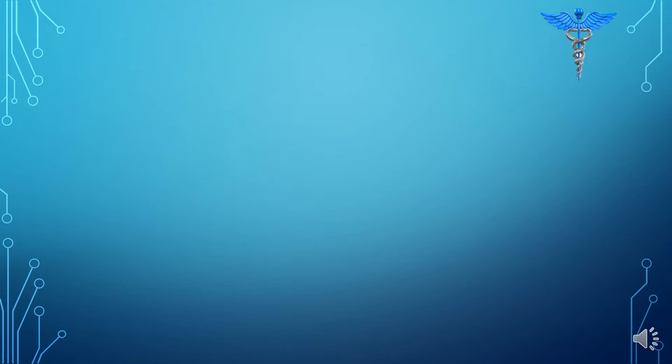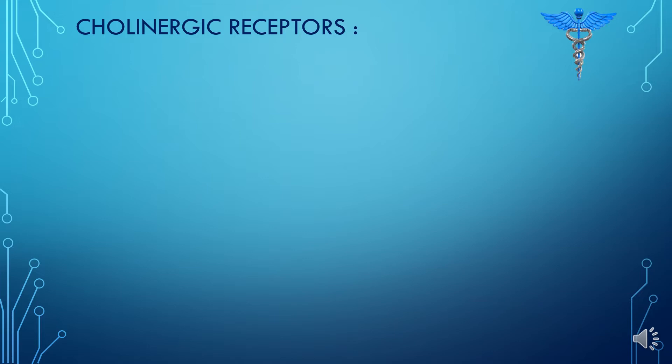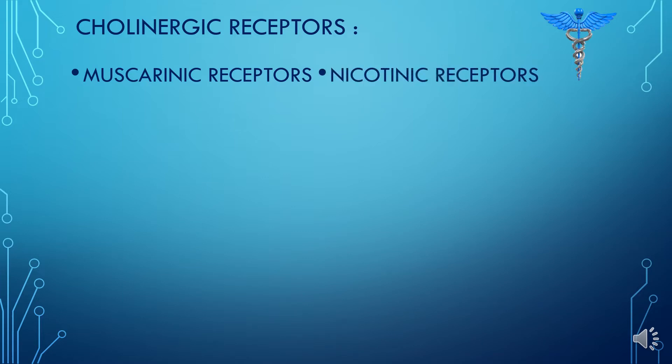Now, coming towards the cholinergic receptors. These are the receptors that use acetylcholine as a neurotransmitter. They are classified into muscarinic receptors and nicotinic receptors, and are distinguished from each other on the basis of their affinity to different cholinergic agents — the agents that mimic the action of acetylcholine.